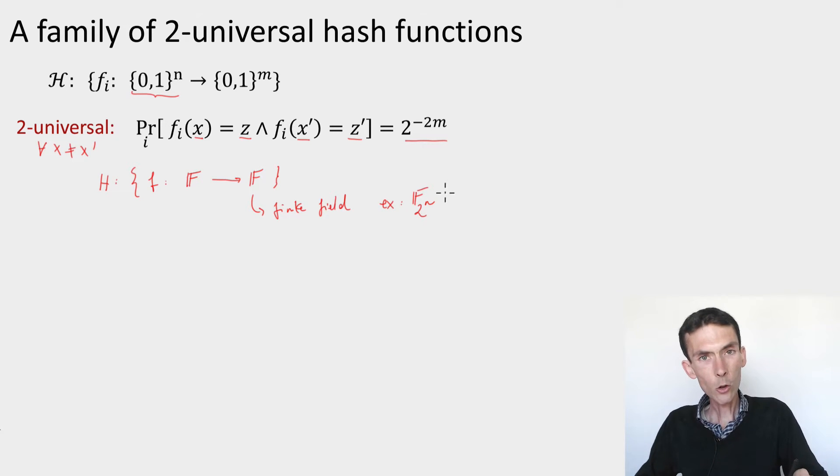In order to get outputs that are m bit strings for any m that's less than n, what we'd do is simply compute these functions and then truncate the output. Write it as an n bit string and remove the n minus m first bits or last bits and this would work. So this is going to be fully general.